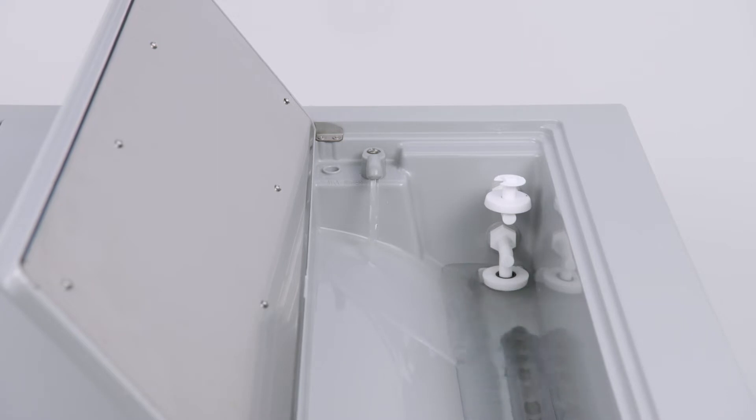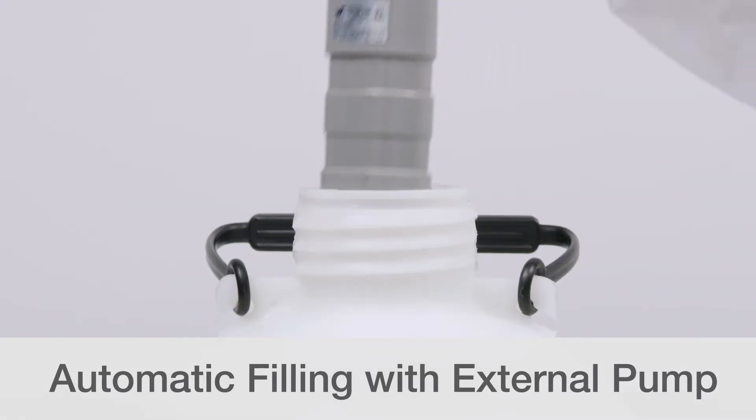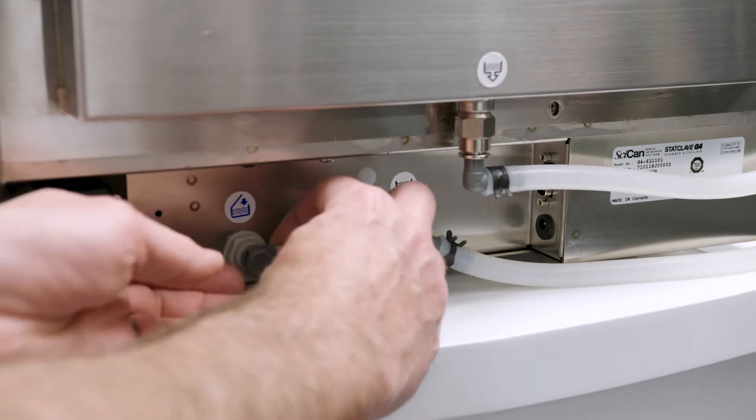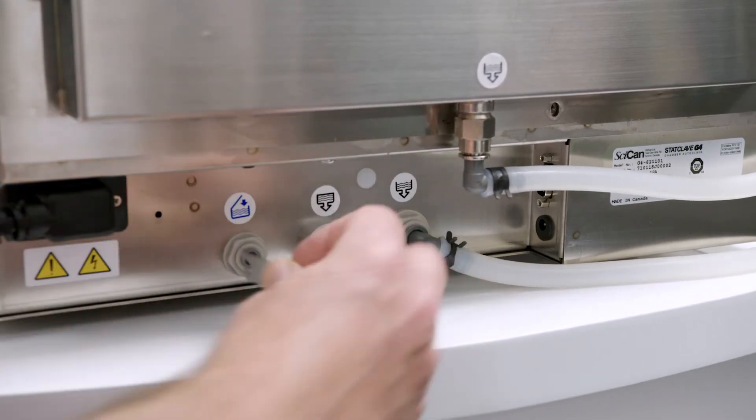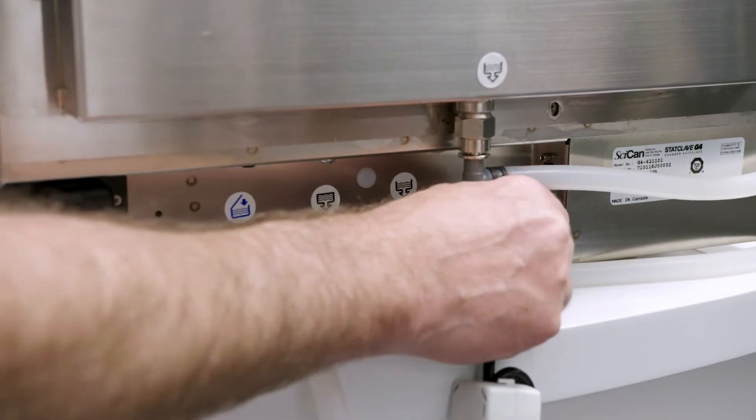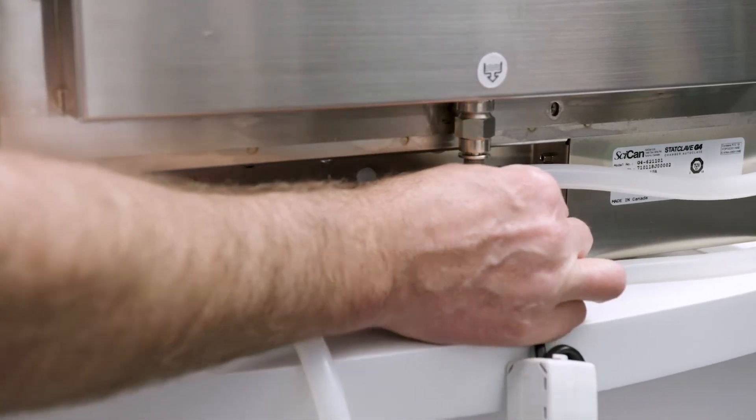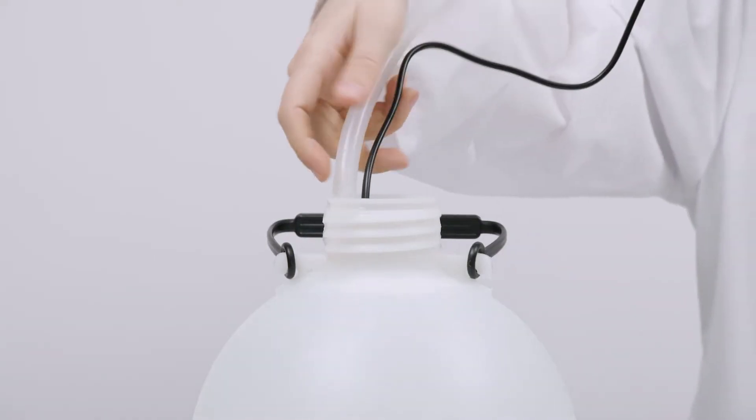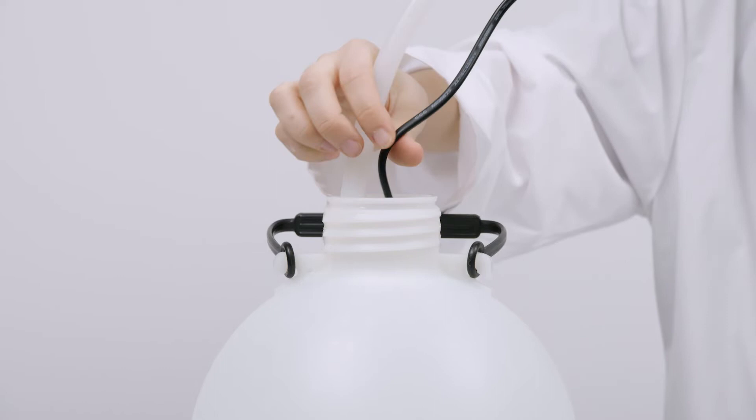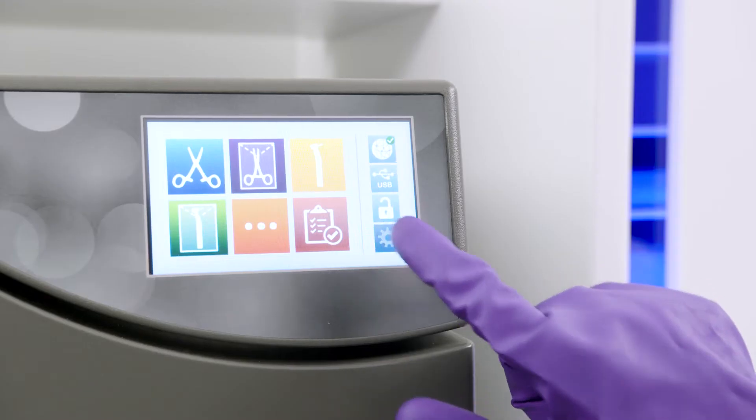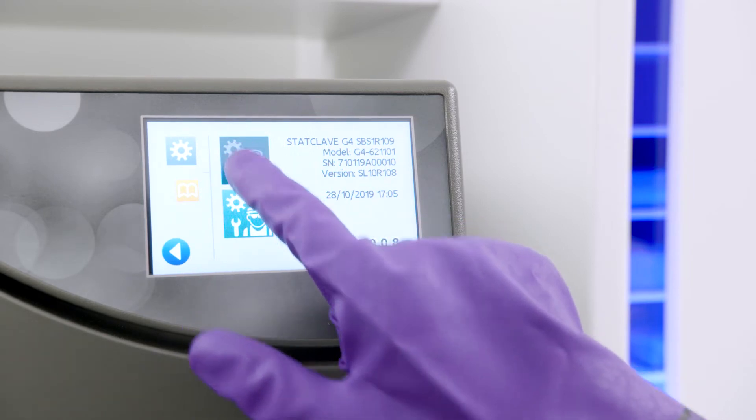You can also automatically fill the clean water reservoir using an external water tank and the optional auxiliary pump. Remove the plug from the automatic fill port at the back of the unit. Connect the fitting at the end of the pump's tubing to the port. Connect the automatic fill pump's power source to the power connection at the back of the unit. Fill the external tank with distilled water and place the submersible automatic fill pump in the external tank. And set your unit's filling mode to automatic.